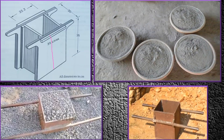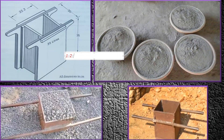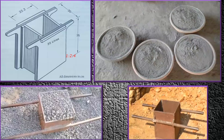Let us take a concrete mix ratio of 1:2:4, where 1 stands for cement, 2 stands for fine aggregate, and 4 stands for coarse aggregate. Since cement is 1, I take one full bag of cement and fill it into the firma box. Then, since fine aggregate is 2, I fill the box with fine aggregate and pour it twice.